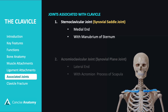The joints associated with the clavicle include the sternoclavicular joint, a synovial saddle joint located at the medial end where the clavicle connects with the manubrium of the sternum. The acromioclavicular joint is a synovial plane joint at the lateral end, where the clavicle meets the acromion of the scapula.